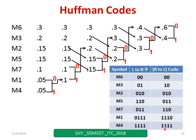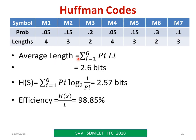Now these are the codewords and these are the symbols. I have to calculate average length: summation i = 1 to 7 of p_i × l_i. Simply filling in p_i and l_i — the length of each codeword — I get 2.6. Similarly, I find entropy H(S) = − Σ p_i log(p_i), and efficiency is H(S) divided by average length L, multiplied by 100. The efficiency comes out to 98.85%.